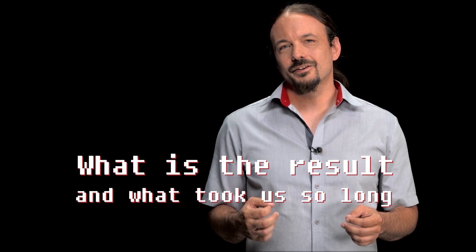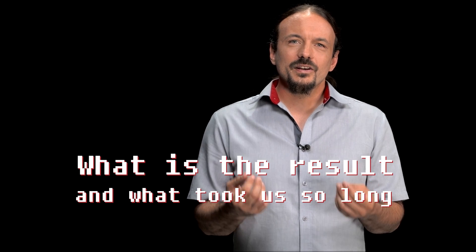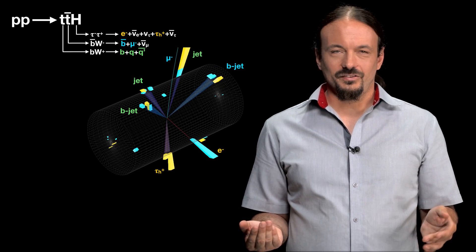Why did we need six years to see this? Well, the measurement is actually very difficult. Just like the Higgs boson, both top quarks will immediately decay. And just like the Higgs, they can decay in different ways. So many different final states are possible.